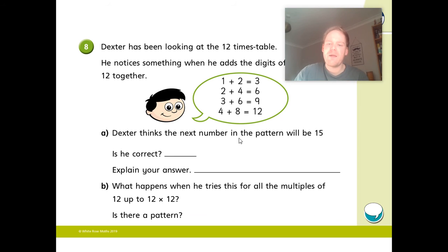Well, Dexter thinks the next number in the pattern will be 15. Is he correct? So work out, so 12, 24, 36, 48, the next number, and then add them up. Does he get 15? Explain your answer.